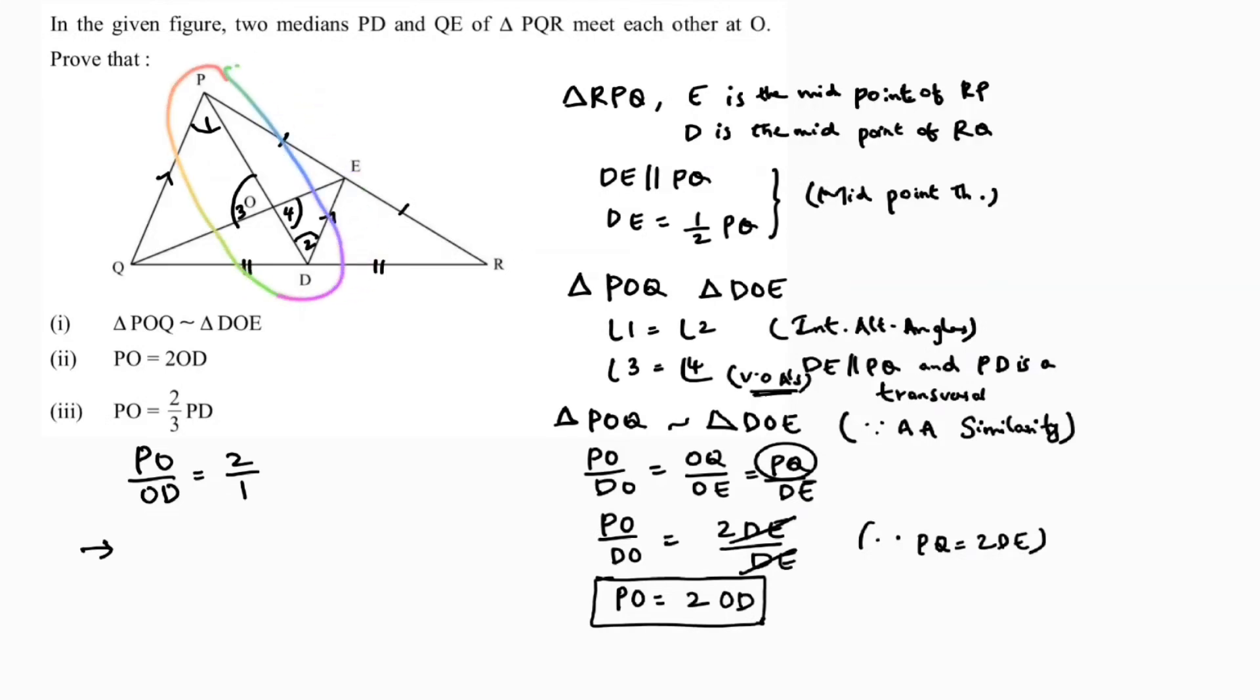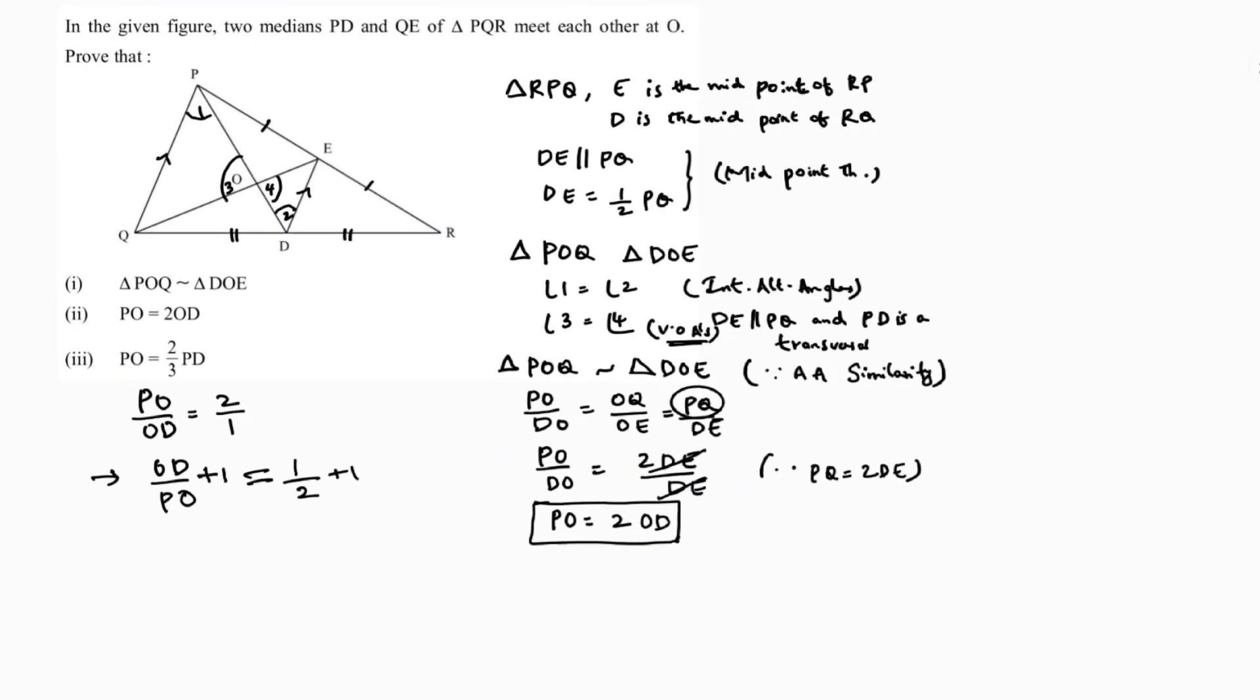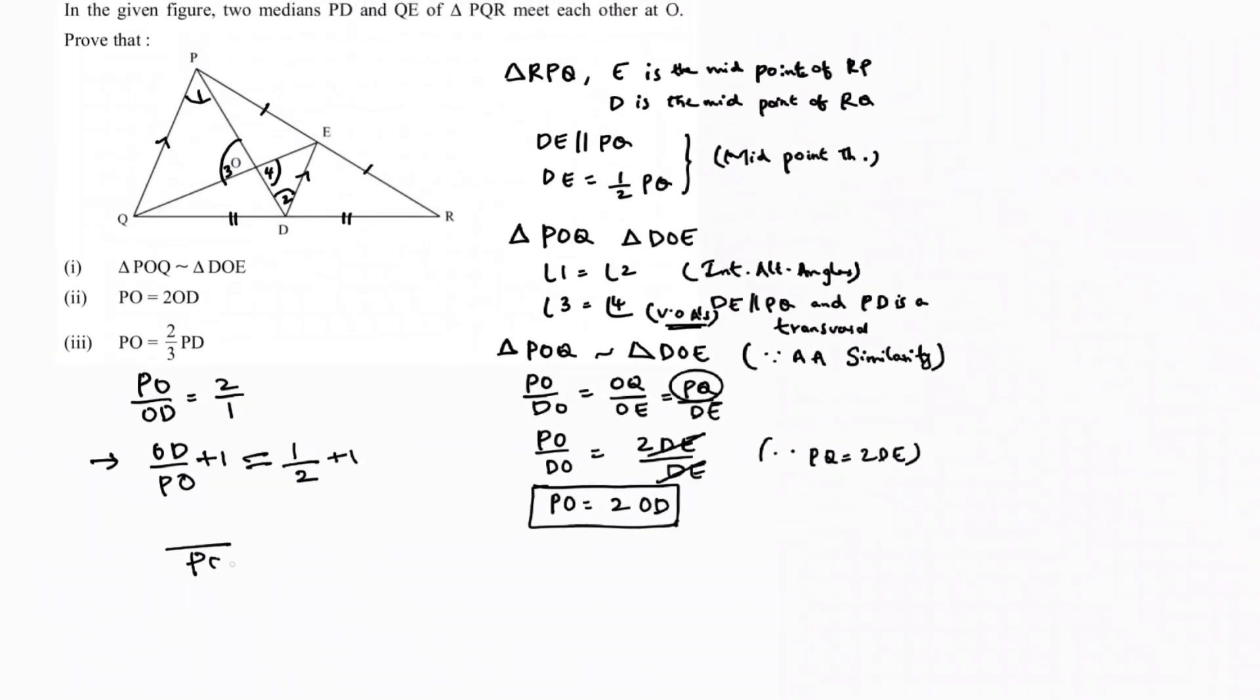Now I'll do componendo, adding one on both sides. Taking LCM on both sides: OD plus PO over PO equals 1 plus 2 over 2.